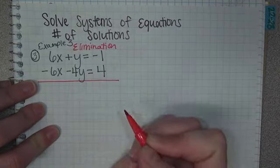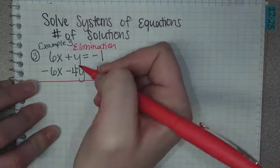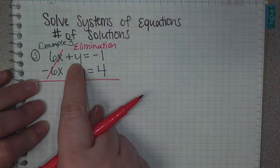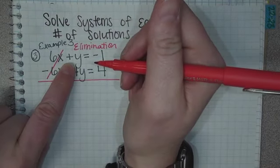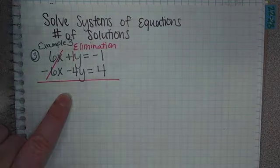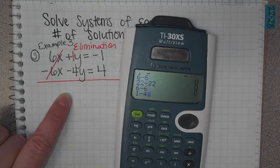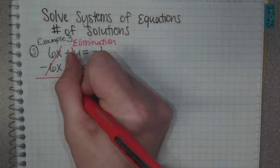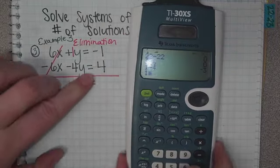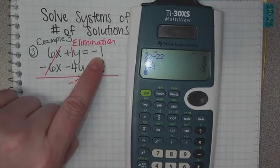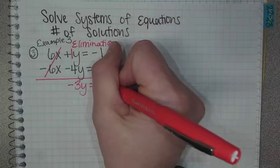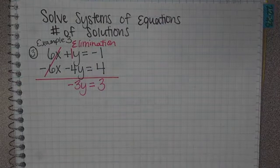We're going to combine them together. What is 6x minus 6x? Put it in your calculator if you're unsure. That's 0, it's canceled out. Now, we have y minus 4y. How many y's do we have right there? That would be 1y. Then 1 minus 4 is negative 3. Negative 3y, bring down your equals, negative 1 plus 4 is positive 3.